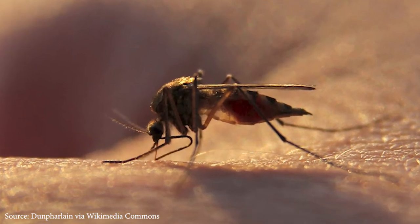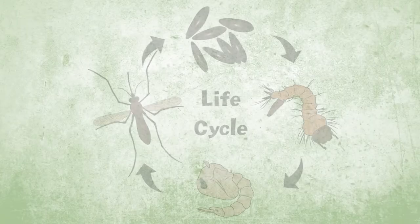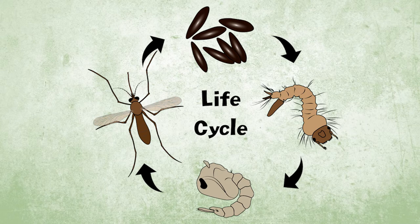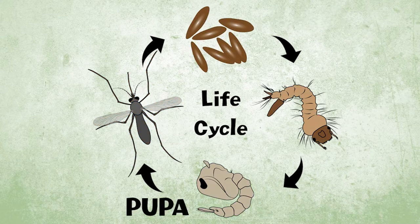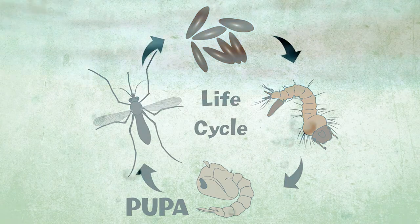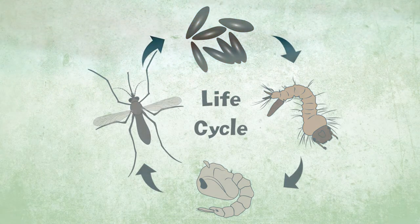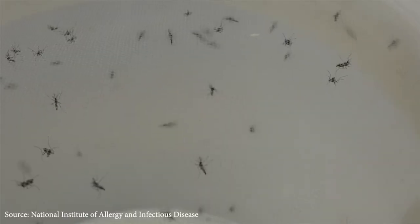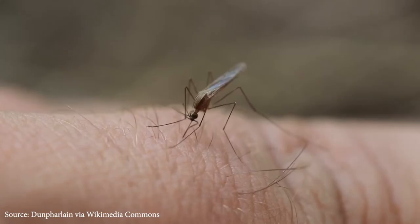To learn about mosquitoes, we'll follow them through their life cycle. Like many other insects, such as butterflies and beetles, the mosquito has a four-part life cycle. The first three parts — the eggs, larva, and pupa — all live in the water. Only in the final adult stage does the mosquito leave the water and become able to fly and bite.